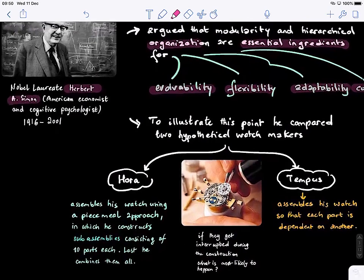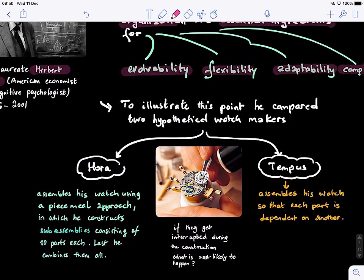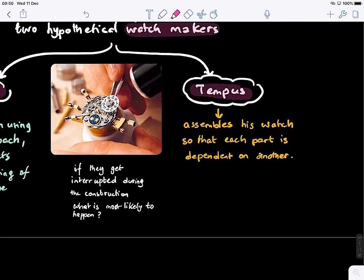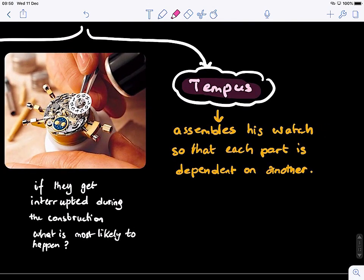So he gave an example to illustrate this point. He basically said, let's hypothesize there are two watchmakers. One is called Hora, the other one is called Tempus. These two watchmakers are making watches. They assemble different pieces of the watches, different parts together, to create the watch, but they adopt completely different strategies.